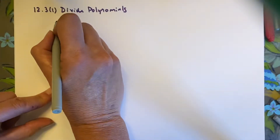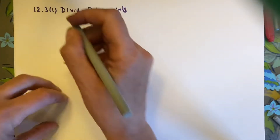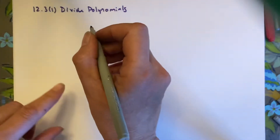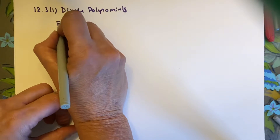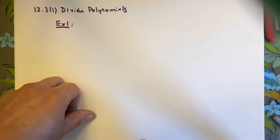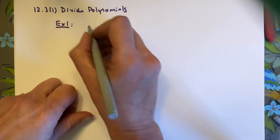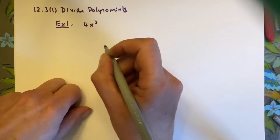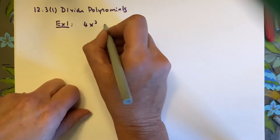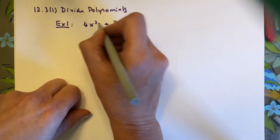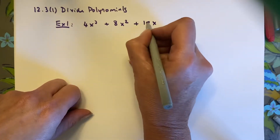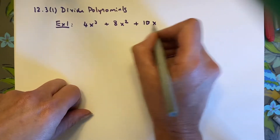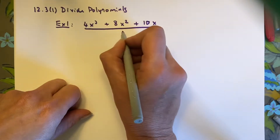First we're going to divide a polynomial by a monomial. A monomial is just something like x, 2x, or 3x. So example 1: we're going to divide the polynomial 4x cubed plus 8x squared plus 10x by 2x.